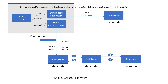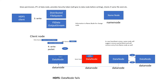Now let's think about this scenario: during the write, there is a data node failure. How will this situation be dealt with? Let's go to this case where a data node is getting failed while we are performing a write. The initial steps will be similar.